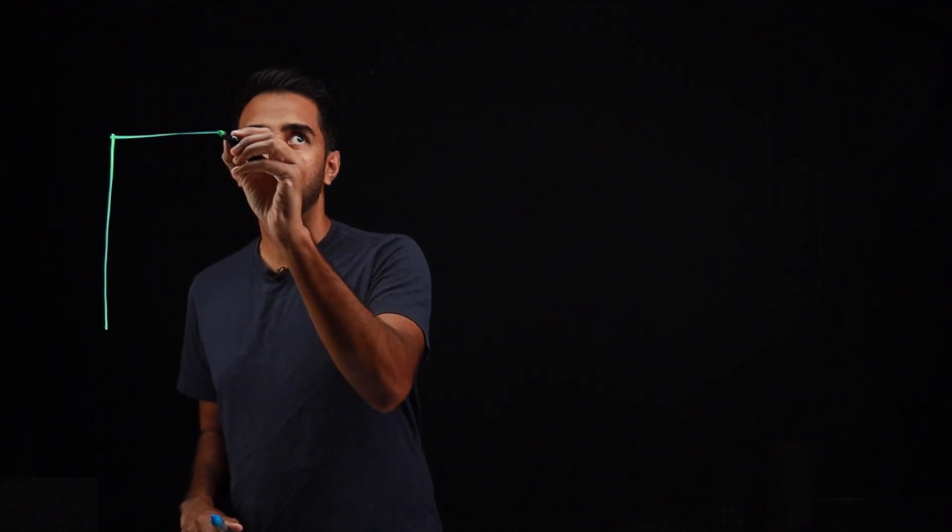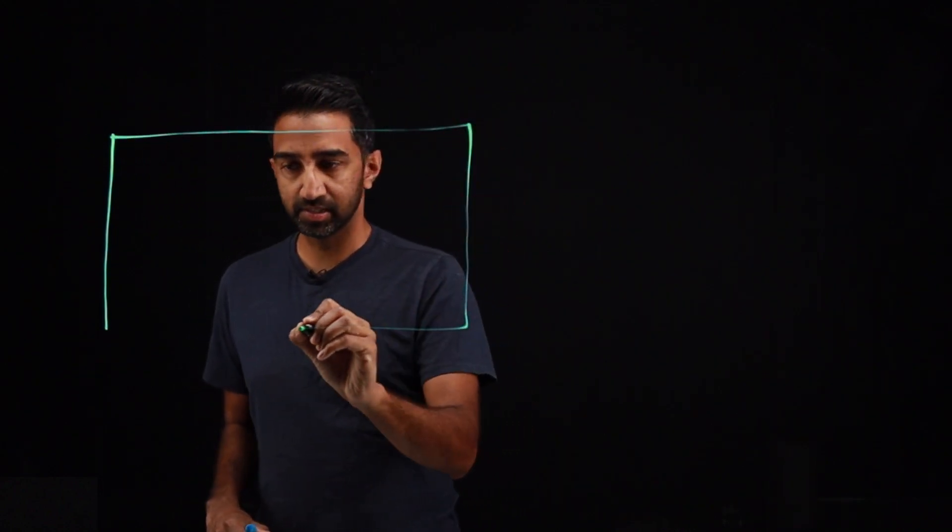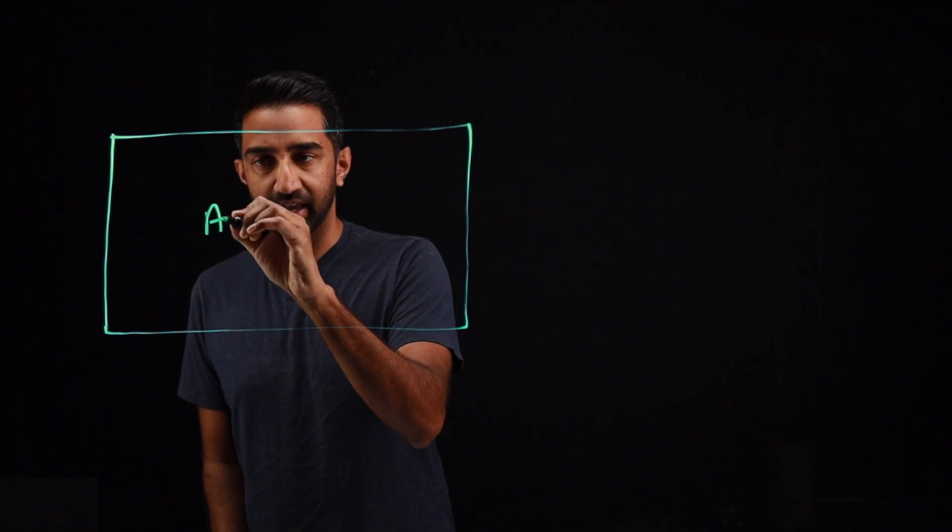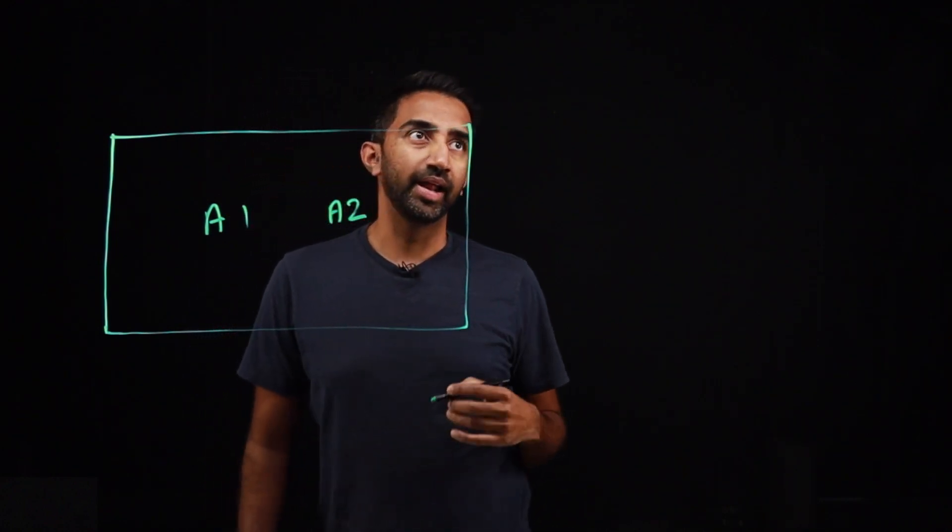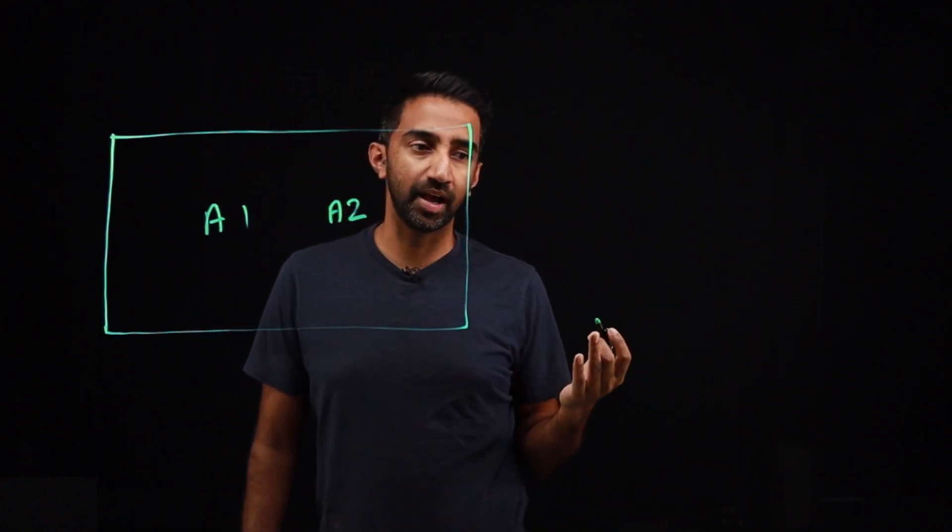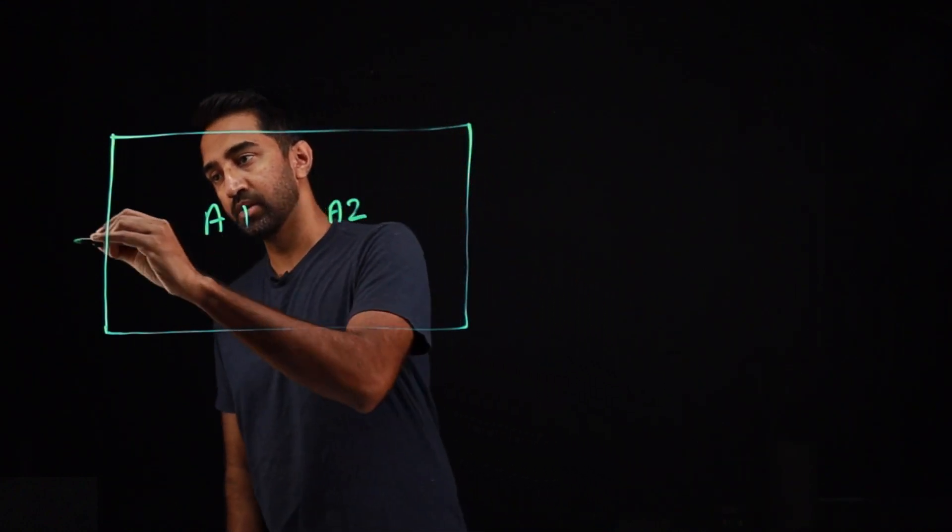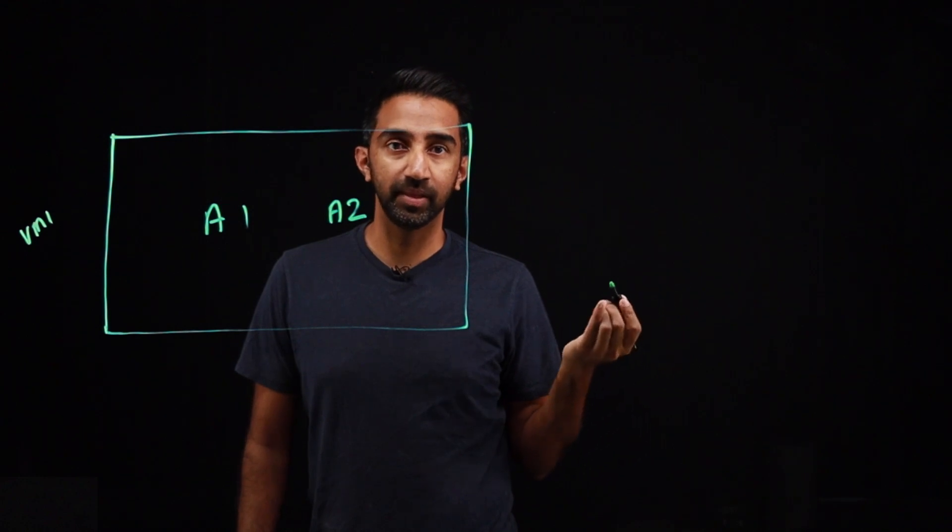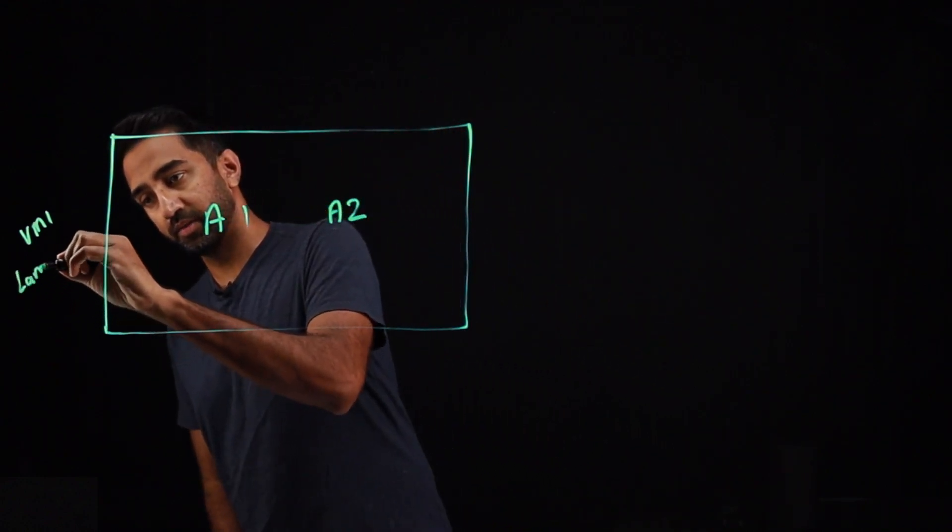So first we'll start with just a single cluster. So let's say that this box represents my single cluster. And let's say I have a couple of workloads on here. These are your Kubernetes deployment services. So I'll just say A1 and then A2. And I also have some legacy applications running as VMs. So I'll write VM1 and then I also have some lambda functions.